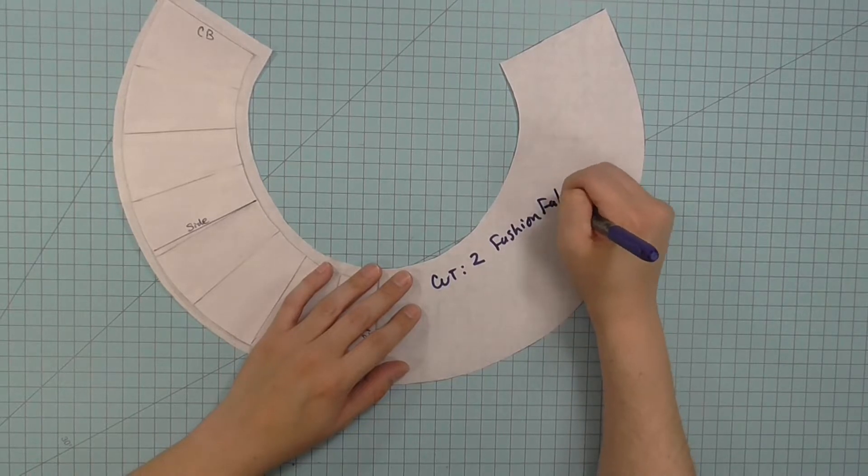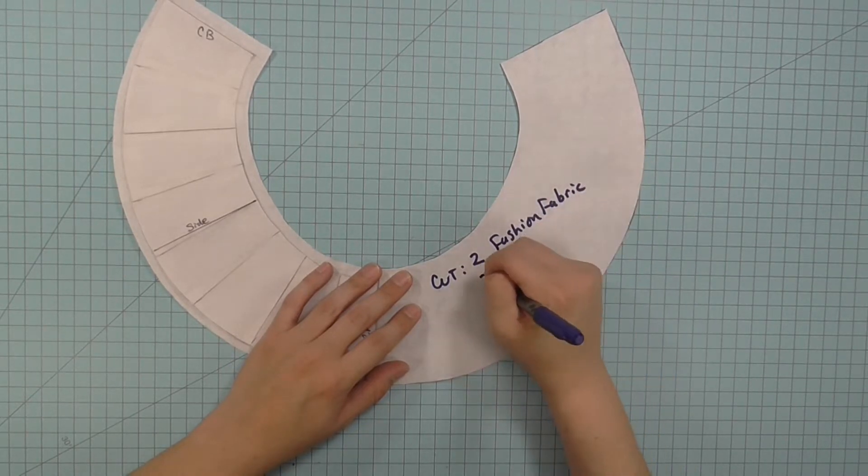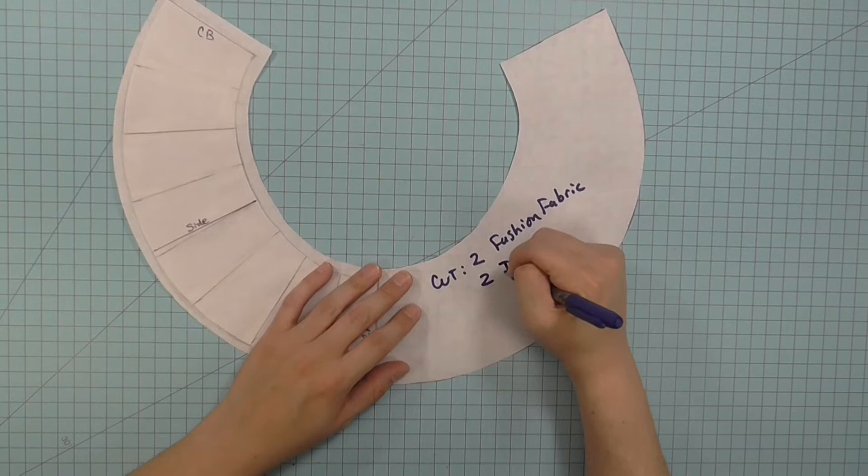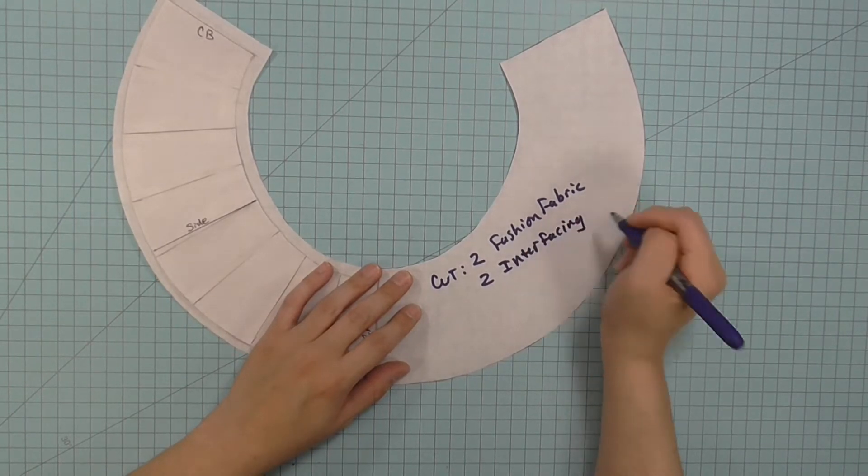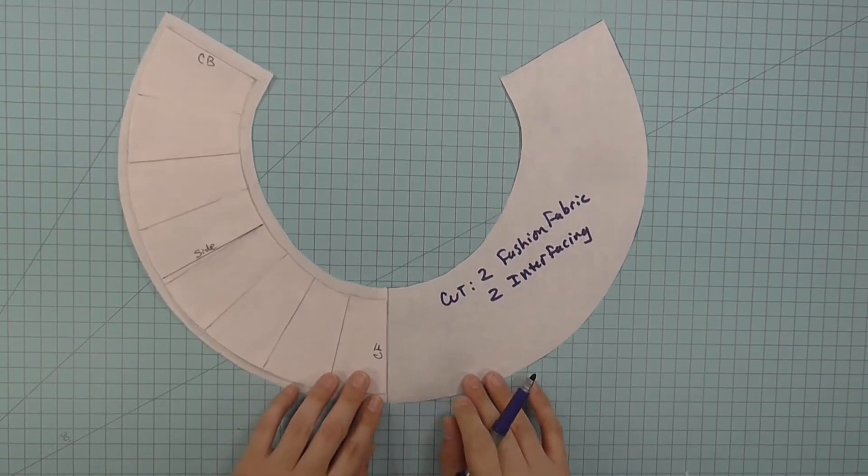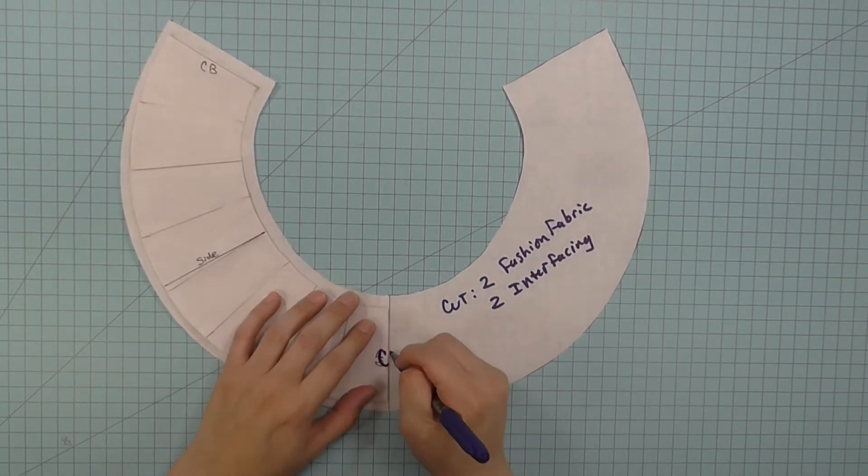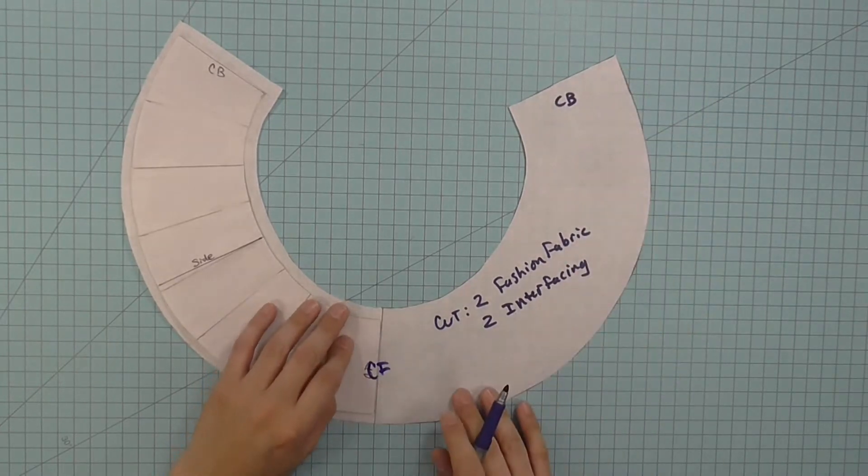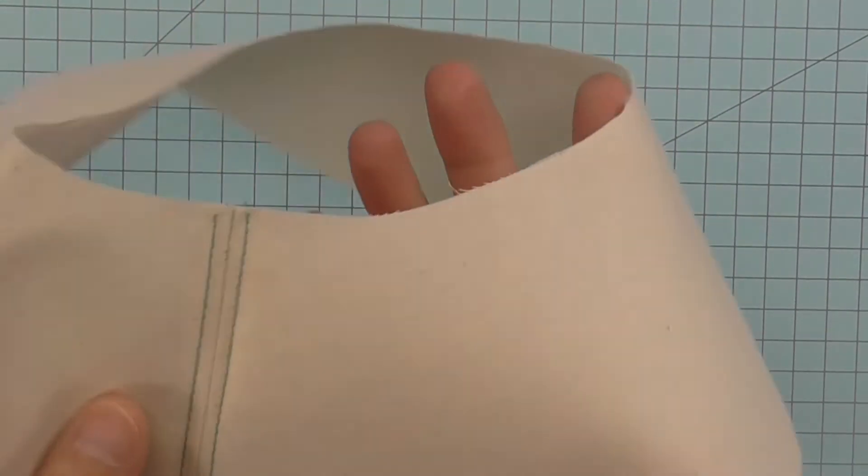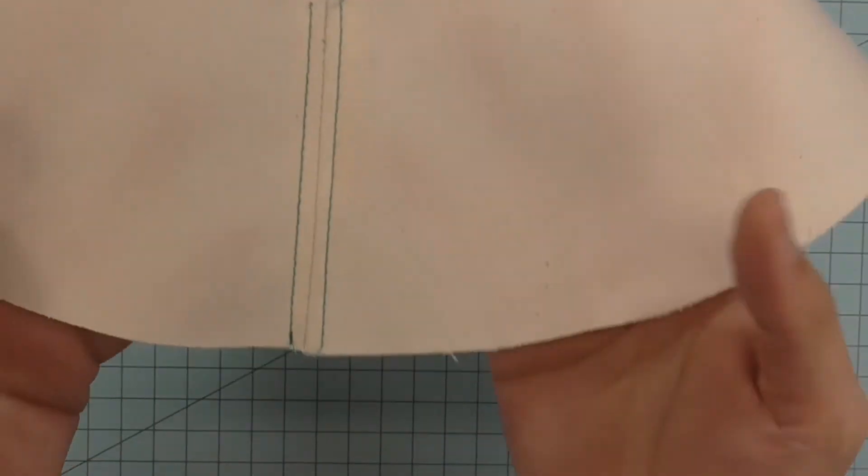Cut out the paper pattern and you're going to cut two of fashion fabric and two of interfacing. If you want an even more stable brim, use a heavier interfacing. If you haven't already done so, label center front and center back. Cut out your fabric, sew the seam, and topstitch as desired.